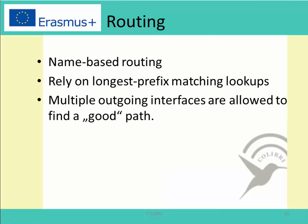Routing in CCN is claimed to be similar to routing schemes in IP networks because they both rely on longest prefix matching lookup, and the FIB table in CCN and the IP routing table are closely related. The only difference is that the FIB allows multiple outgoing interfaces, while in IP routing only one outgoing port is allowed. Forwarding to multiple interfaces in an IP network would lead to loops in the topology, but in contrast, this is not a problem in CCN since neither interest nor data packets can be looped.